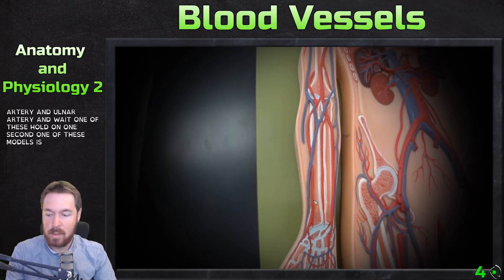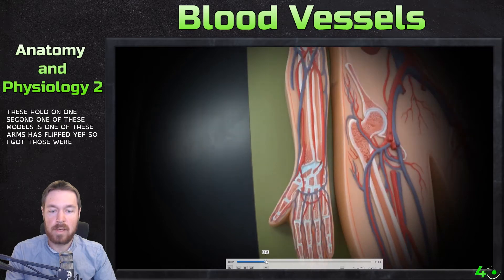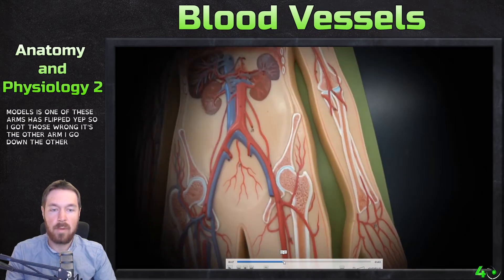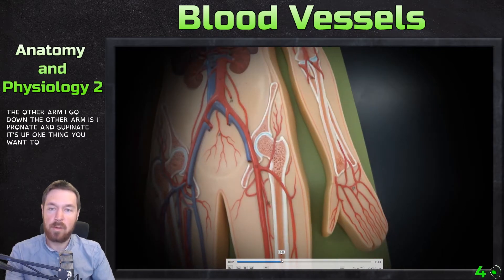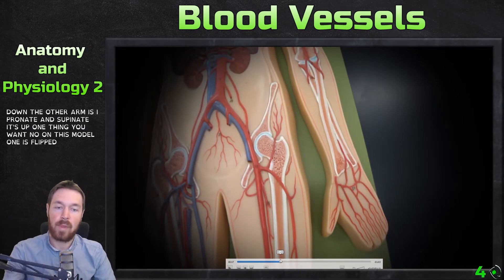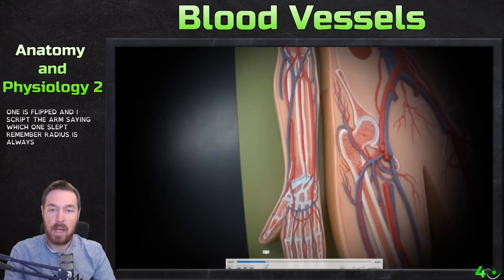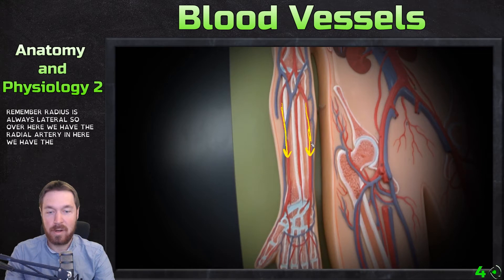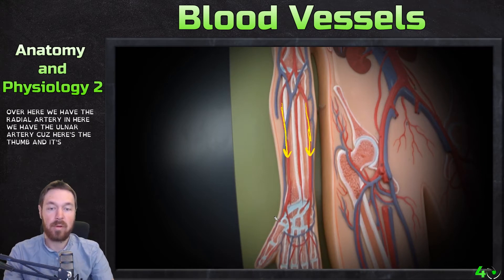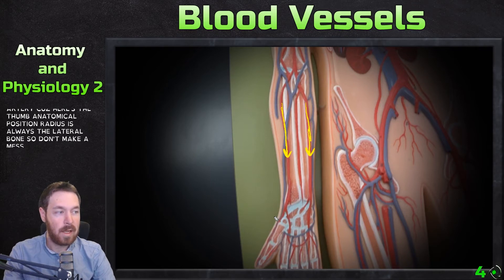One of these arms on the model is flipped. Remember: the radius is always lateral, so over here we have the radial artery and here we have the ulnar artery. Here's the thumb — in anatomical position, the radius is always the lateral bone. Don't make the mistake I just did.